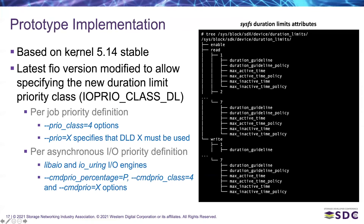All of this was implemented in kernel 5.14 stable. The experiments are based on the latest FIO version, which is modified to accept specifying this new duration limit priority class. Specifying this class can be done per job — per process using the prio_class and prio options — or per asynchronous IO for the libAIO or io_uring IO engines using the cmdprio_class and cmdprio options.